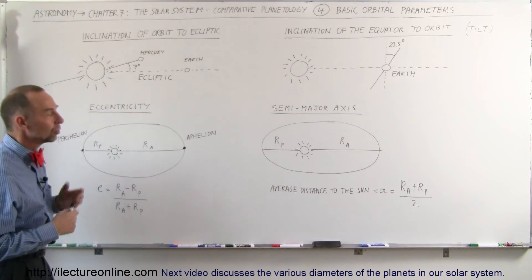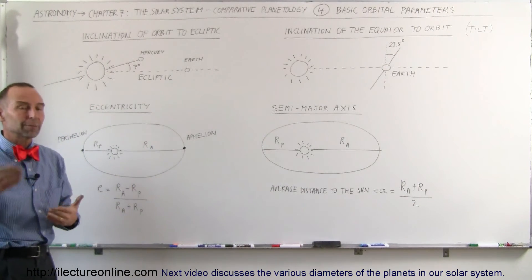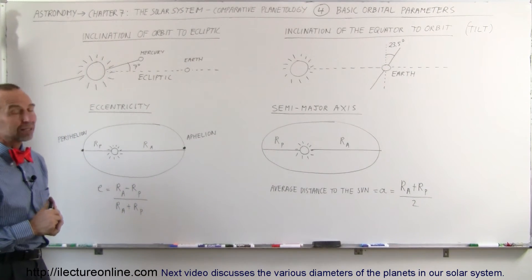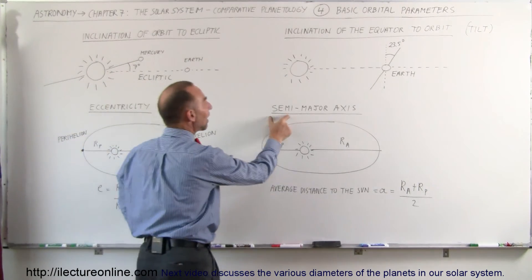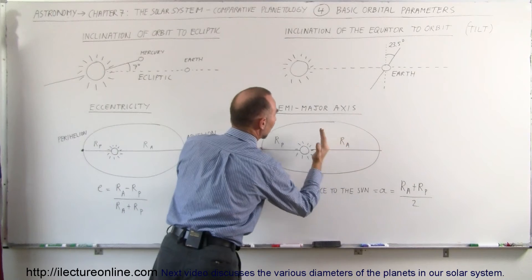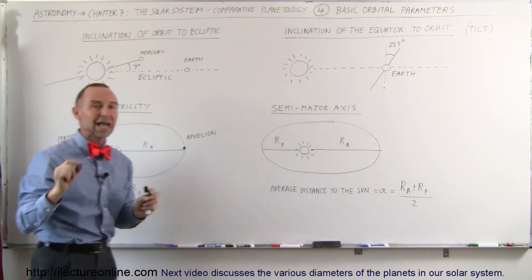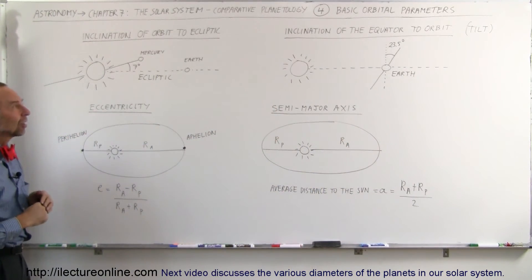A is usually used in astronomy to denote the average distance between the planet and the Sun, and that's how it's calculated. It's the semi-major axis. Semi means half the major axis. If this is the major axis, take half of that, that's the semi-major axis, which is then the average distance from the planet to the Sun.